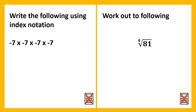Onto the intermediate questions — there's a slight increase in difficulty. Write using index notation. This time, negative 7 is the base number, and negative 7 has been multiplied by itself, itself, and itself again, meaning there's a total of negative 7 to the power of 4.